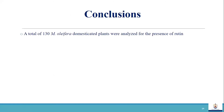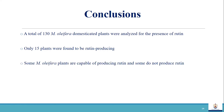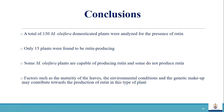In conclusion, we analyzed a total of 130 Moringa oleifera leaf samples for the presence of rutin, of which we only found 15 plants to be rutin-producing. We concluded that Moringa oleifera is therefore capable of producing rutin. However, there are factors that might be contributing to the production of rutin in Moringa oleifera — factors such as the maturity of the leaves, the environmental conditions, and the genetic makeup of the plants.